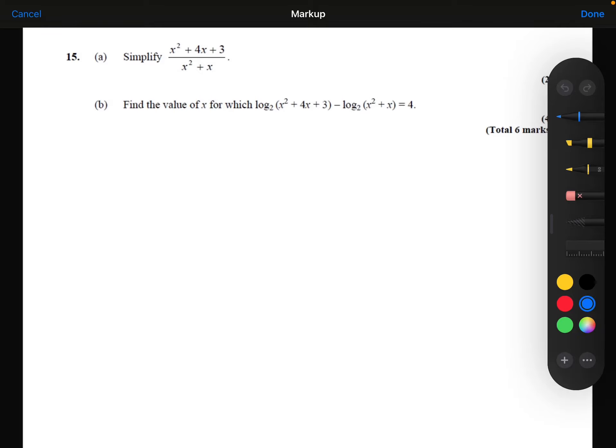Simplify x squared plus 4x plus 3 over x squared plus x. So let's do some factorizing.